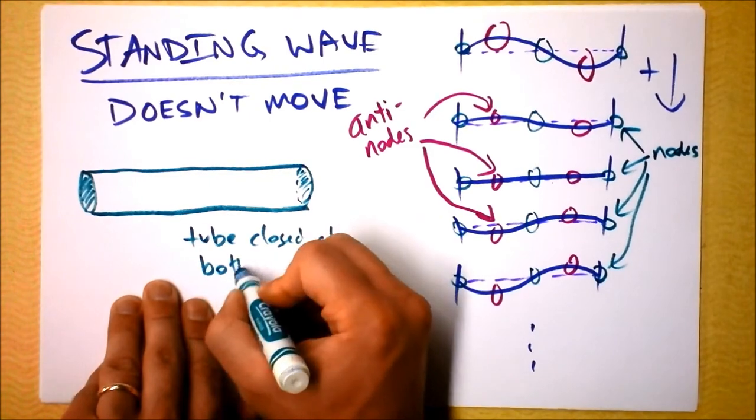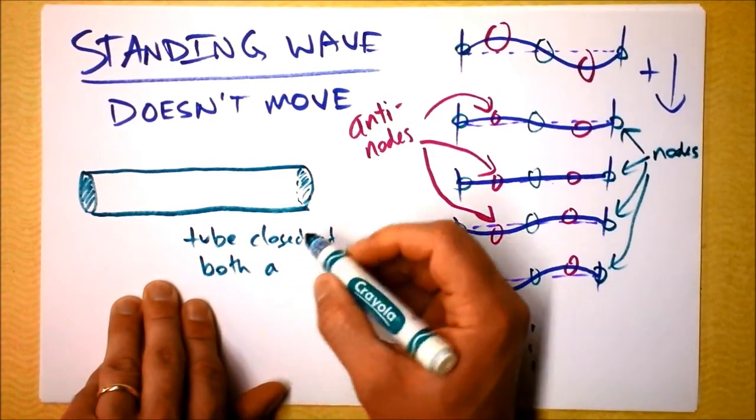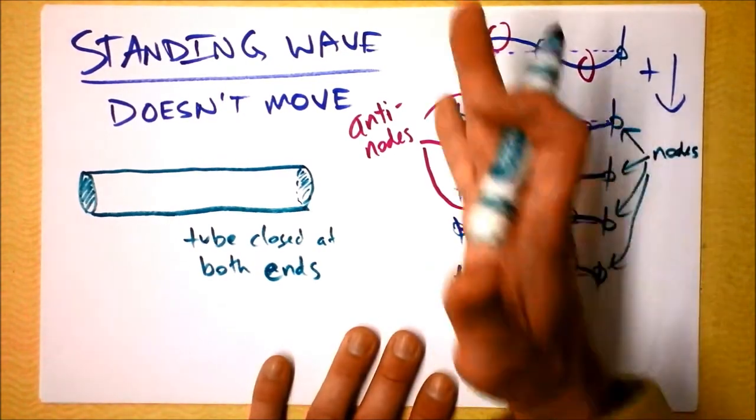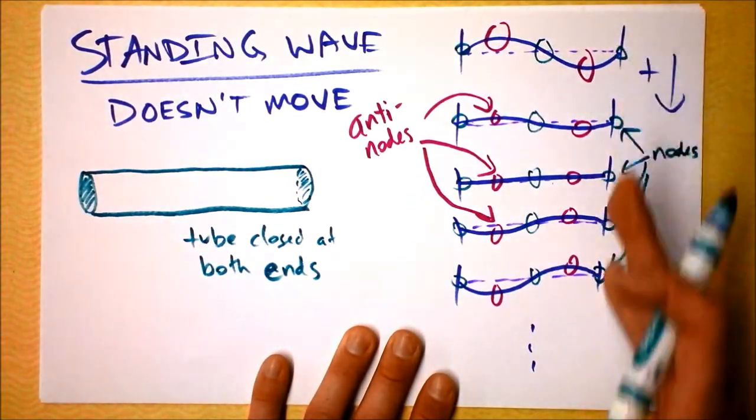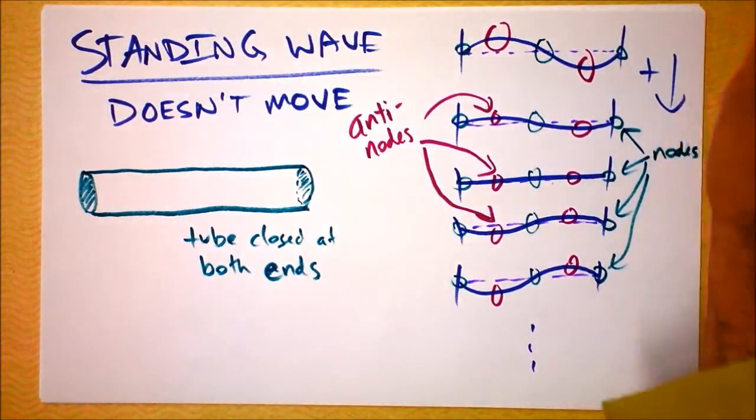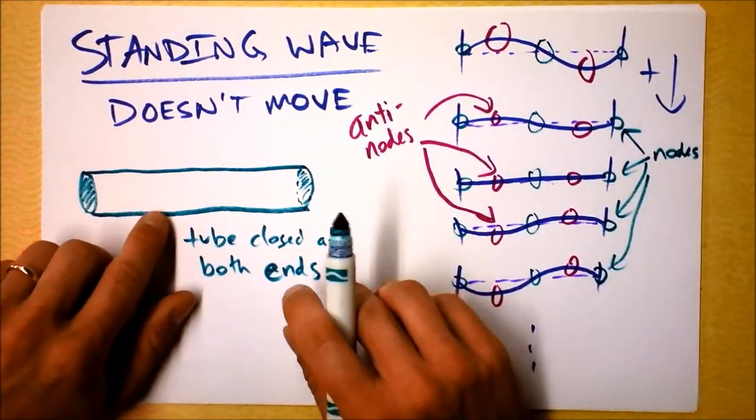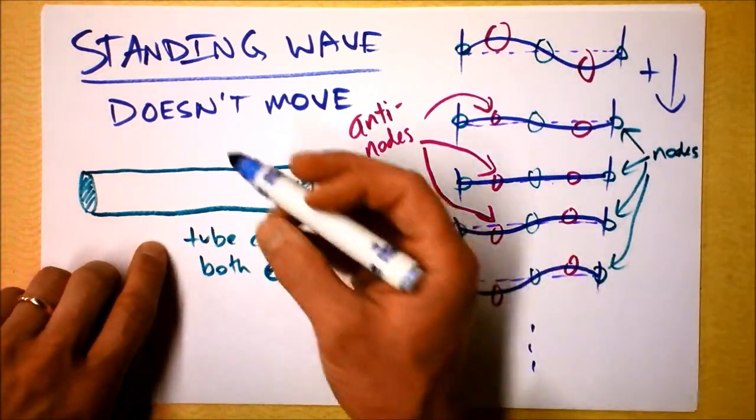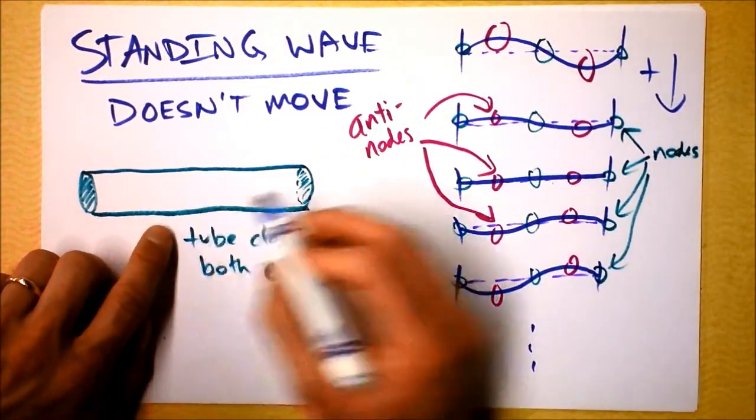I want to make an exact analogy to this system right here where we've got a fixed end at this side and a fixed end at this side. The boundary conditions are such that we could get standing waves in here. So, the tube closed at both ends is going to have a wave that acts similar to this.